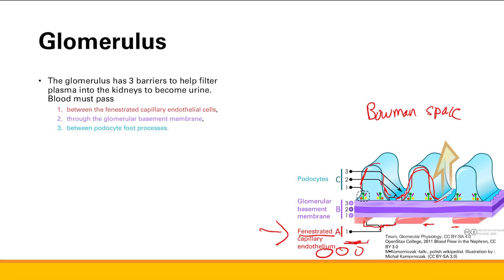So we have our three different layers. All three barriers filter the blood through two different methods: through charge and through size.